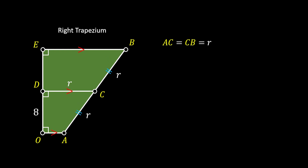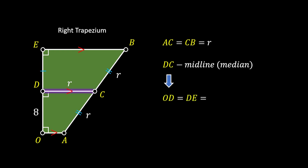This leads us to conclude that this quadrilateral is actually a right trapezium. Point C divides the leg AB of our trapezium into two identical segments each of length r. This means line DC represents the midline or median of this right trapezium. Since the median always divides the legs of a trapezium into two identical segments, we can conclude that segments OD and DE must each have the same length of 8.